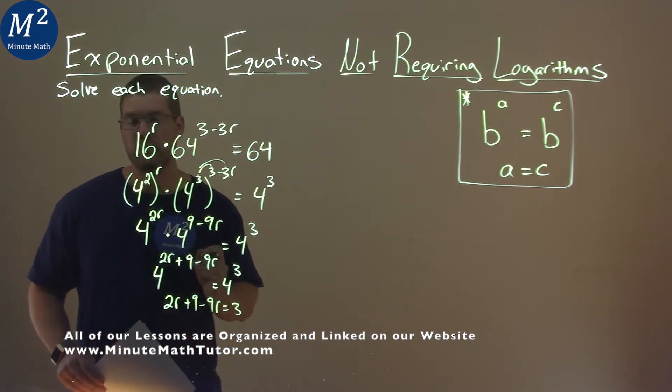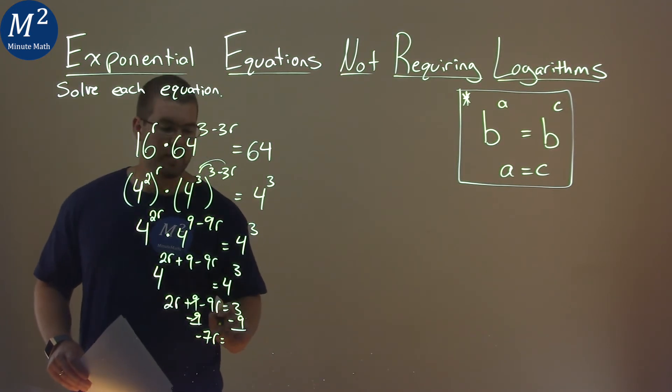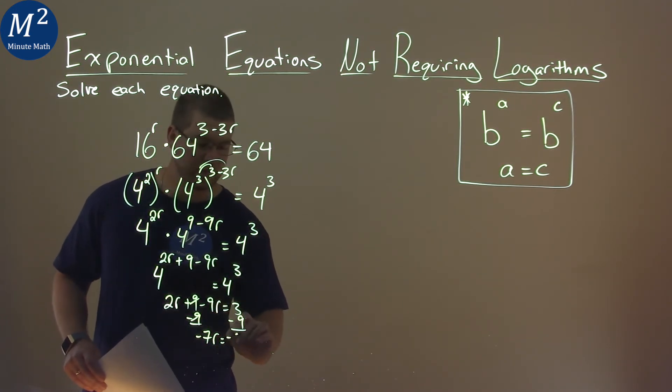So we have 2r plus 9 minus 9r is equal to 3. From here, we need to solve for r. I subtract 9 from both sides to get our like terms together. 2r minus 9r is minus 7r, and that's equal to 3 minus 9, which is minus 6.